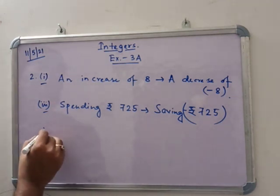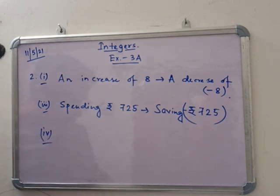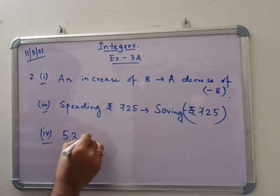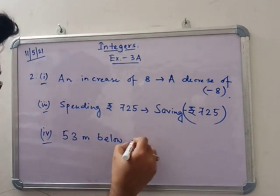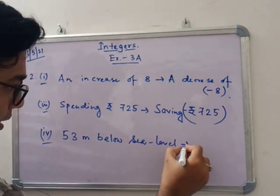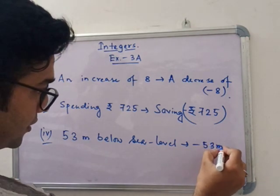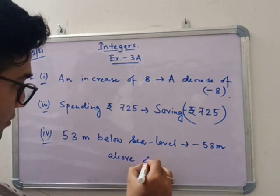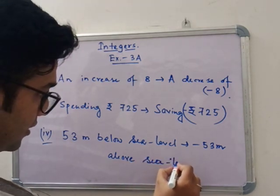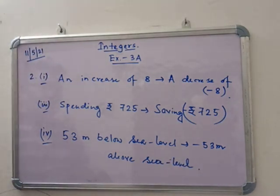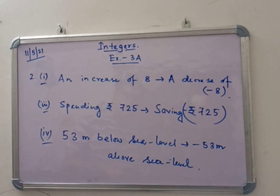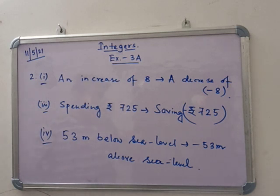Number 4: 53 meters below sea level — that means minus 53 meters. In number 2, indicate the following using a negative sign. An increase of 8 means a decrease, so write minus 8. Number 3: spending Rupees 725 — saving is the opposite, so write saving minus Rupees 725. In this table, express with a negative sign: spending means saving minus 725; 53 meters below sea level, just write it negatively in the sentence.